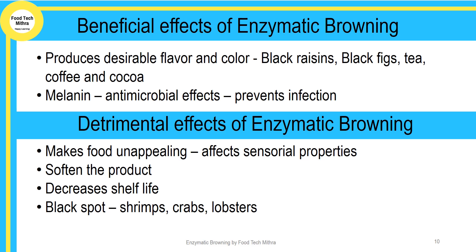Enzymatic browning has both beneficial and detrimental effects. The beneficial effects include producing a desirable flavor and color during the processing of black raisins, black figs, tea, coffee, and cocoa. Also, the brown pigment melanin formed during enzymatic browning has an antimicrobial effect, which helps in preventing infection in the products.